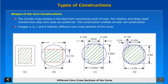Images A, B, C, and D indicate different core cross sections of the cores. The construction shown in image D with three step sizes of core is commonly used for large transformers.